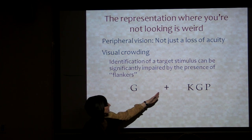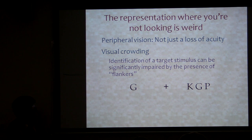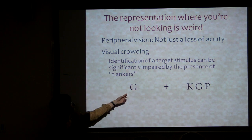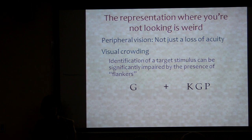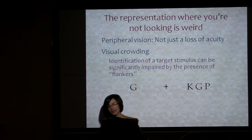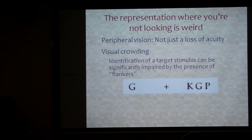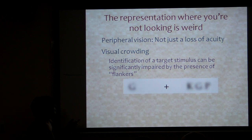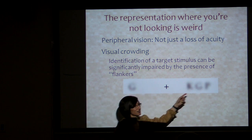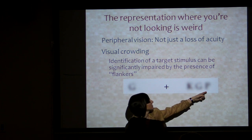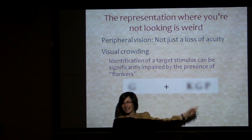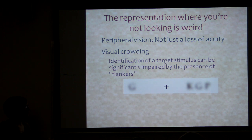Perhaps the clearest demonstration of this is from visual crowding. If you look at this plus sign in the middle, you probably have no trouble resolving and reading the G on your left. But if you put some flankers modestly spaced nearby, it becomes a lot harder to tell what that central letter is. And just to give you a demo that this isn't just due to loss of acuity — you can progressively blur the display, and when you finally blur it enough to have trouble reading the flanked one, you also have trouble reading the one with no flankers. So it's not just an acuity loss; there's something weirder going on with crowding.